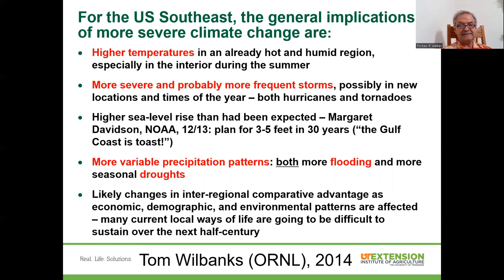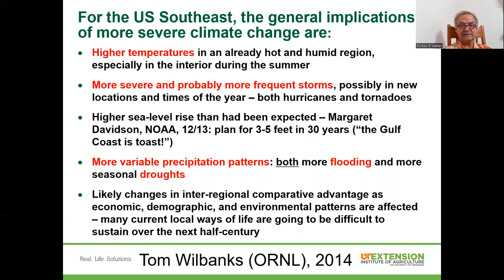We are also seeing higher sea level rise on the coast, with suggestions of several feet in the next few years, and the Gulf Coast may not look the way it has for many years. We're seeing more variable precipitation patterns, more flooding and more droughts, which obviously has implications for how we are able to get into our fields in springtime to plant. A wet springtime may delay planting and thus delay our potential yield. And finally, we're seeing likely changes in economics, demographics, as well as environmental patterns, all due to climate change.